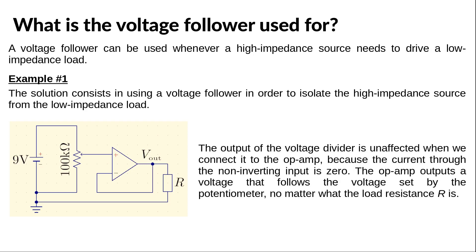The solution consists in using a voltage follower in order to isolate the high impedance source from the low impedance load. The output of the potentiometer is unaffected when we connect it to the op-amp because the current through the non-inverting input is zero. The output of the op-amp is equal to the output of the potentiometer no matter what the value of R is, as long as R is much greater than the output impedance of the op-amp, which is typically a few ohms.